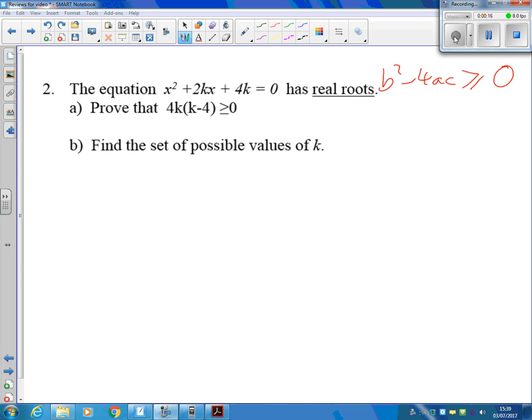So we want greater than or equal to 0. The a value here is 1, the b value is 2k, and the c value is 4k, so we've got b squared, 4k squared minus 4 times 4k is greater than or equal to 0.